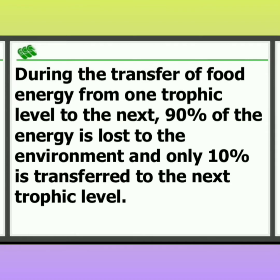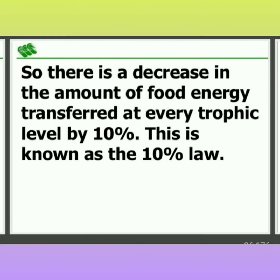First of all, only 1% of solar energy can be used by the plant. Of that 1%, 90% of energy is lost to the environment, and only 10% of energy is transferred to the next trophic level. So there is a decrease in the amount of food energy transferred at each and every trophic level. This is known as the 10% law. The 10% law states that the amount of energy absorbed by the producer — only 10% of it will be transferred to the next trophic level, and 90% of energy will be lost into the environment.